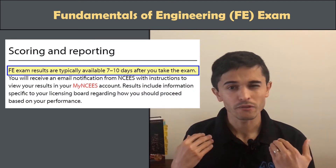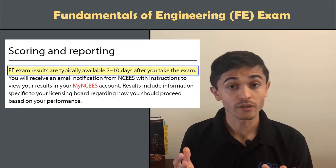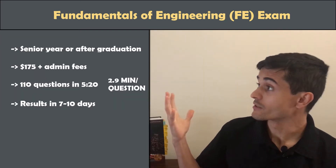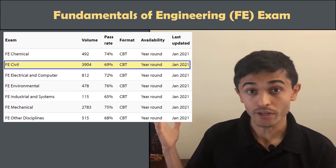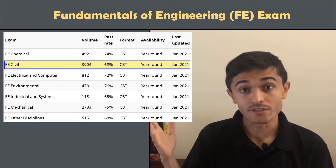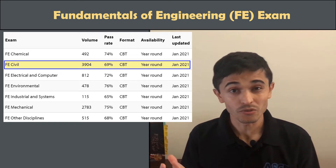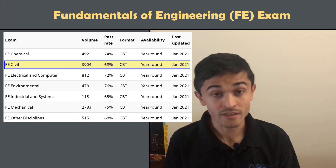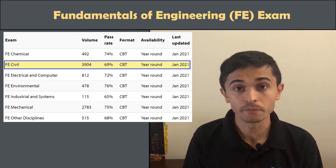I got my results the week after I took the exam — I took it in my senior year of college. According to the NCEES website, results come in about seven to ten days. The pass rate is actually pretty high for the FE: about 3,900 people took the FE civil exam and 69 percent passed.